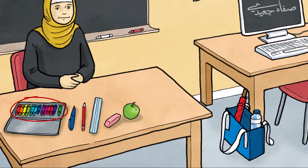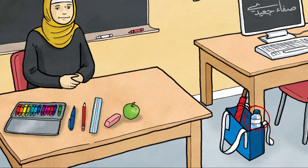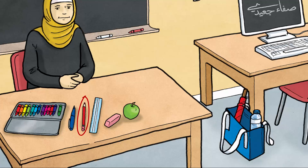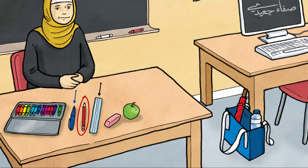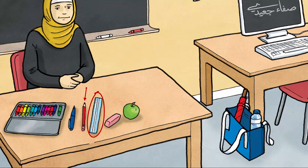The crayons are in the box. The water is in the bag. The pencil is between the ruler and the pen. The ruler is between the pencil and the eraser.